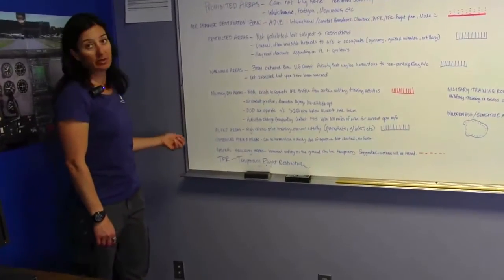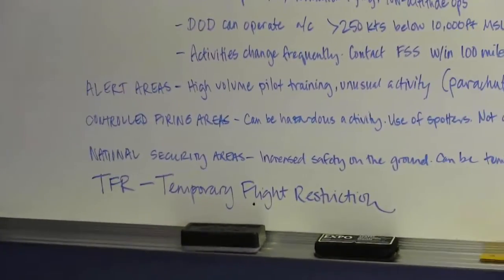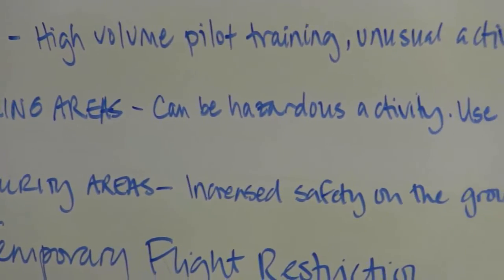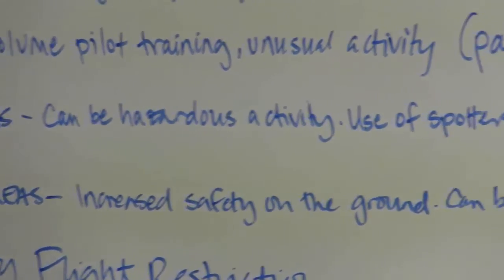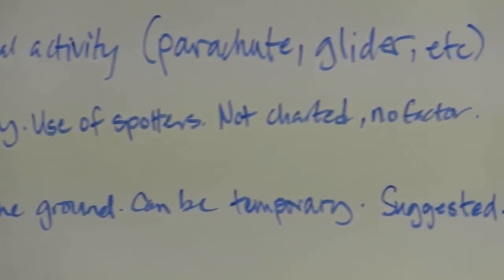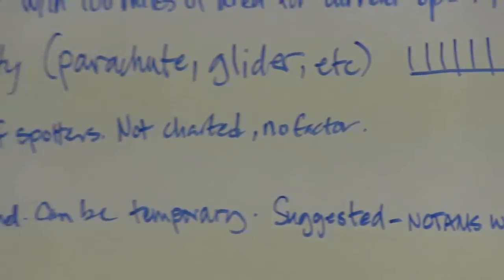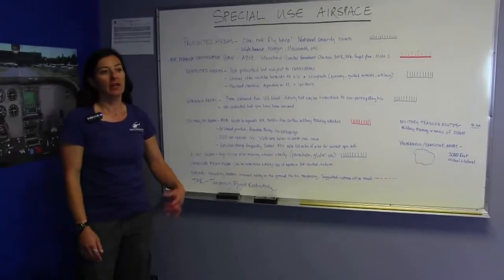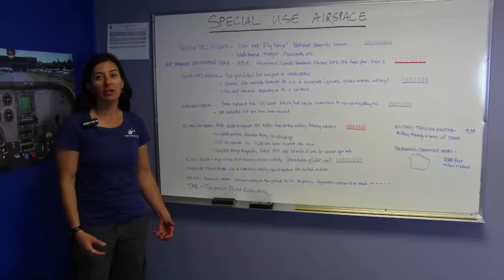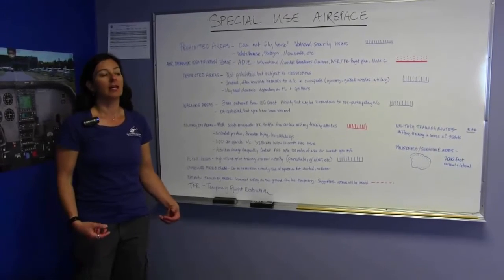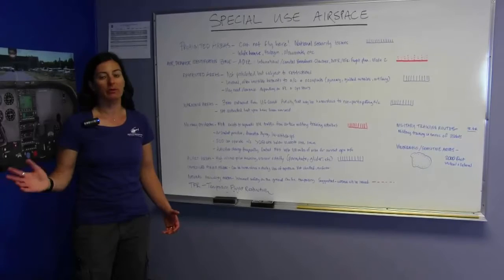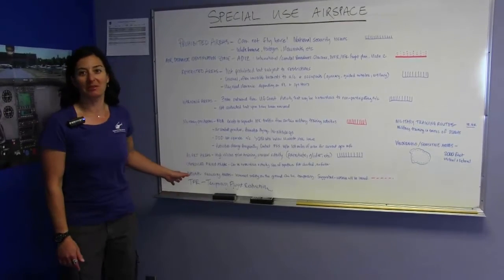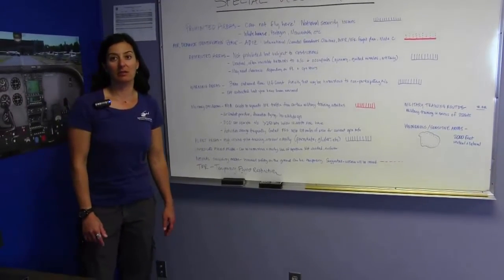Controlled firing areas are also special use airspace and can involve hazardous activity; however, they are not depicted on a sectional because they use spotters. Personnel in the area are watching for civilian aircraft, and as soon as they see somebody they stop all operations. You go through and then they resume. So it won't be charted but it's also no factor — don't be alarmed.